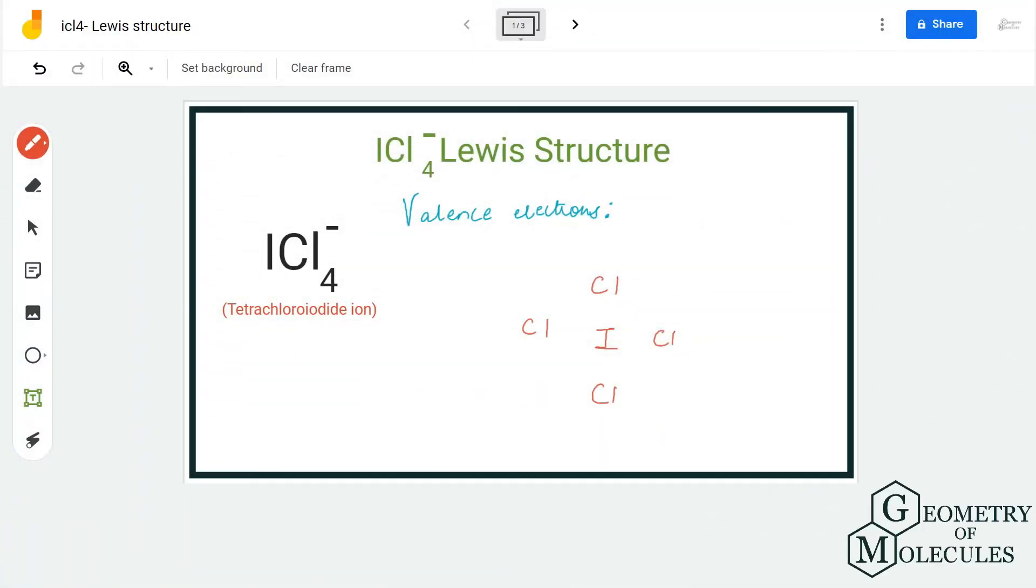Hi guys, welcome back to our channel. In today's video we are going to determine the Lewis structure for ICl4 minus. It has a chemical name of tetrachloroiodide ion, and as it has a negative charge over here, it's an ion.